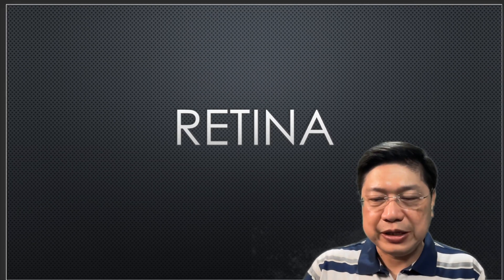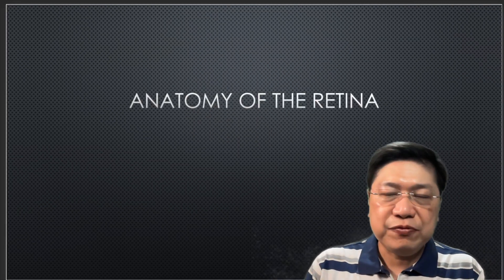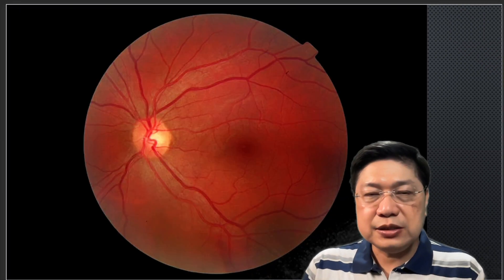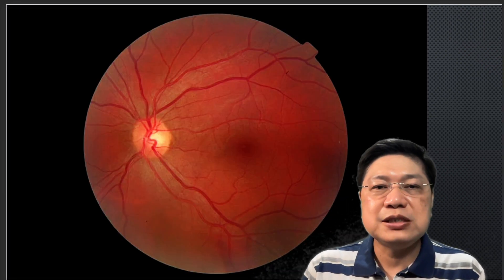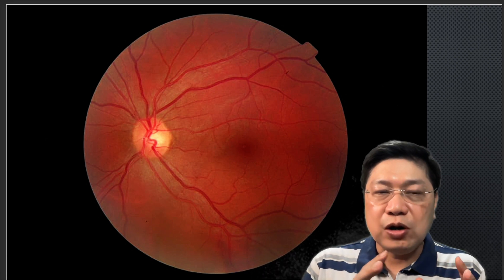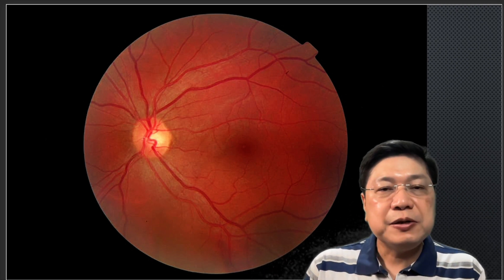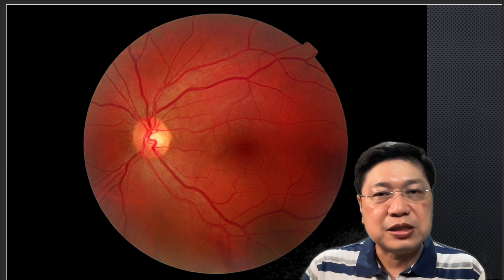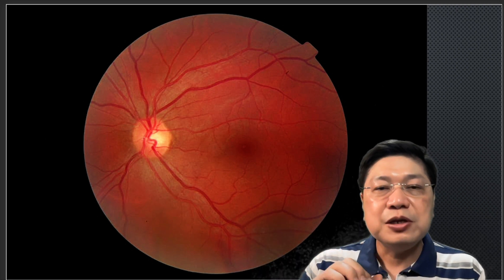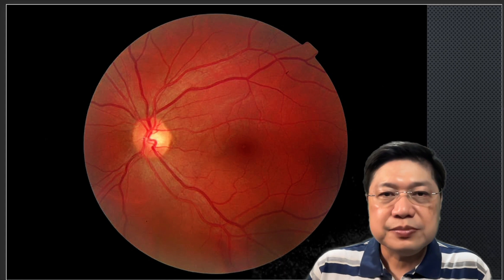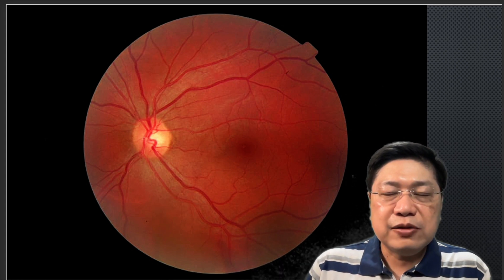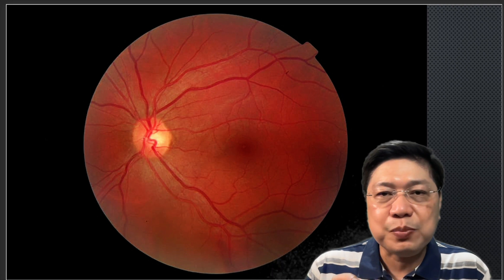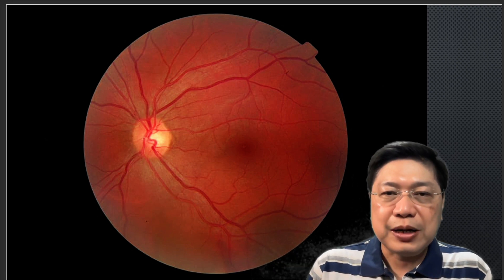Today we will be talking about the retina. Let's have a brief review of the anatomy of the retina and this is how it looks when you look inside your patient's eye. You can see the optic nerve and the disc. You can see blood vessels going out of it, some going up and some going down. These are called the arcades, and at the very center of your patient's eyeball you will see a dark spot called the macula.